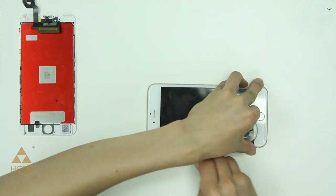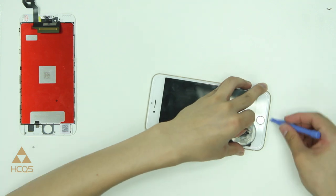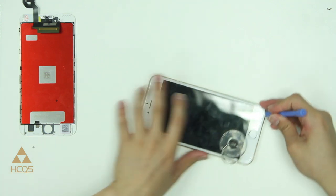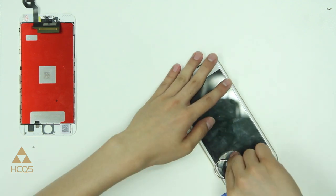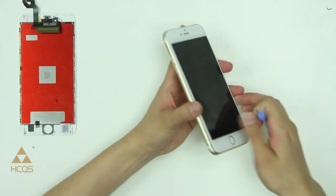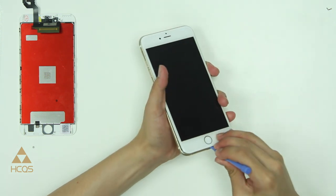Now on the 6S and 6S Plus there will be some adhesive on the inside so you'll have to pry a little harder than usual but once you start to get it open you shouldn't have any problems. Just remember that we have cables attached at the top end we don't want to put any stress on them.